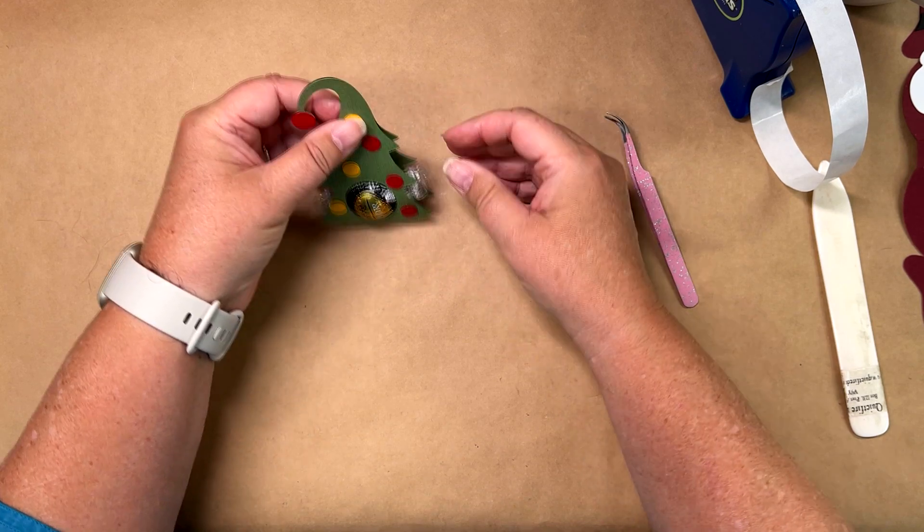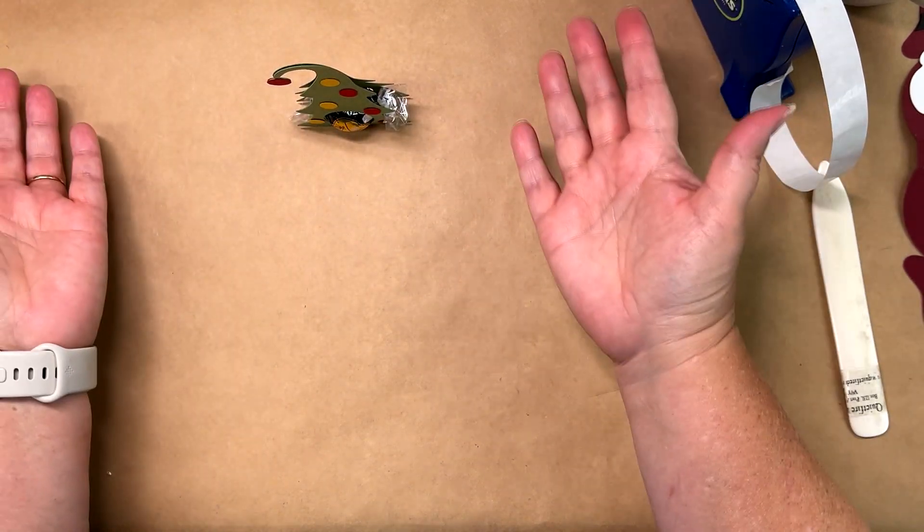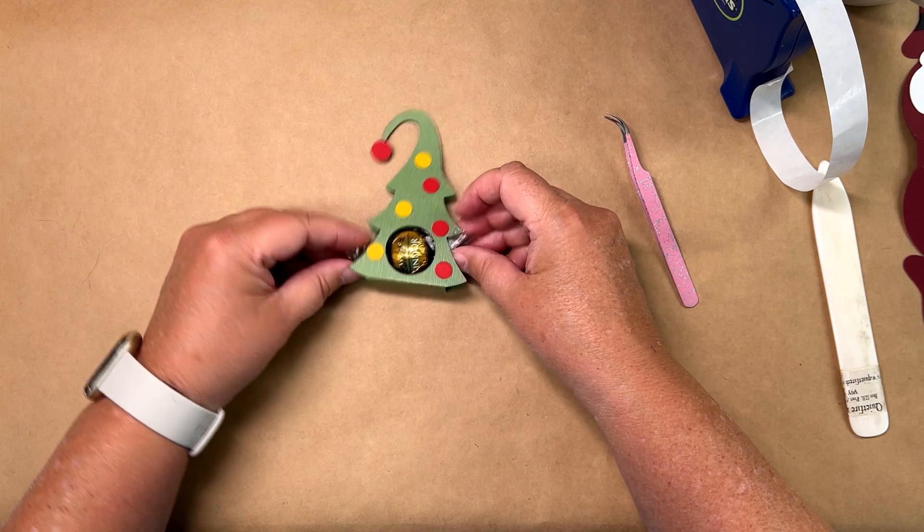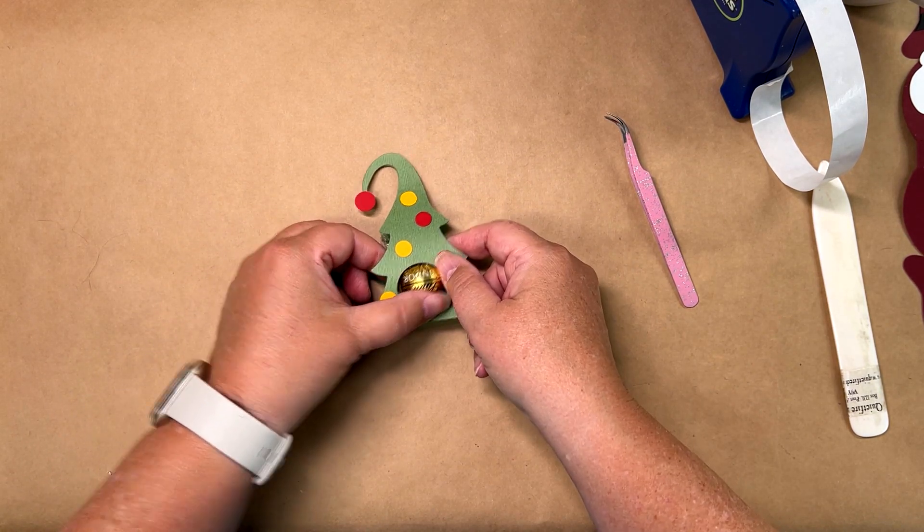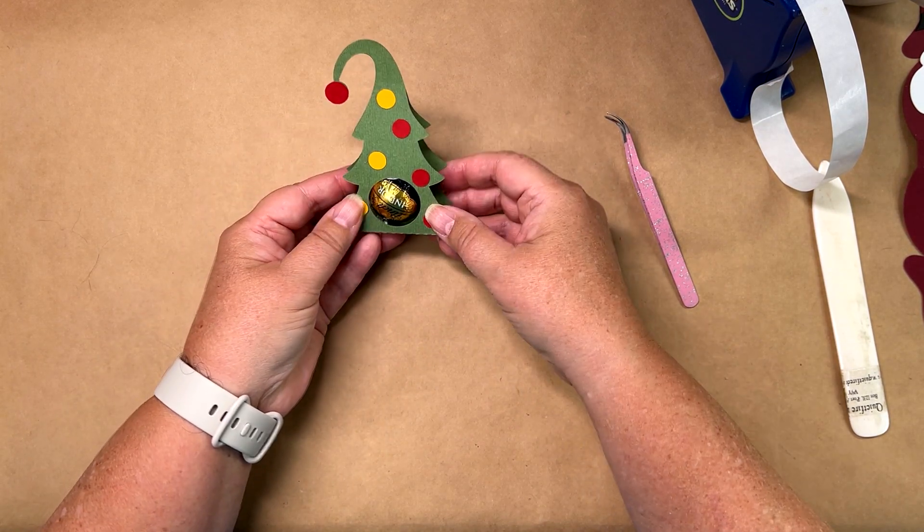And it'll stand on its own. So you can put it on a mantle or at a place setting. And if you really want to, you can push the candy around so that it reads the right way up.